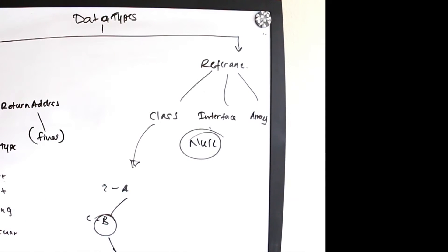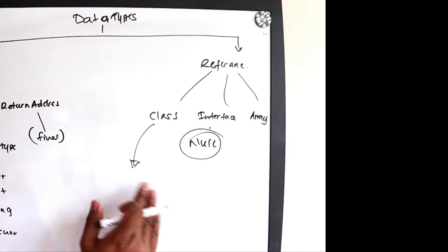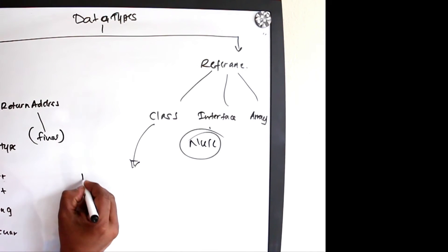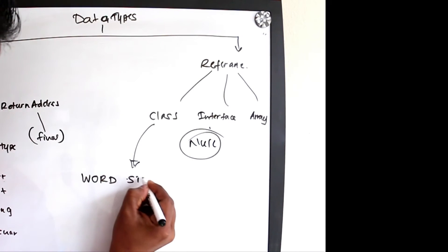Array type is a reference to arrays. There is also another reference type called null — null is a special type that is not referencing anywhere. There is also another special keyword called 'word'.